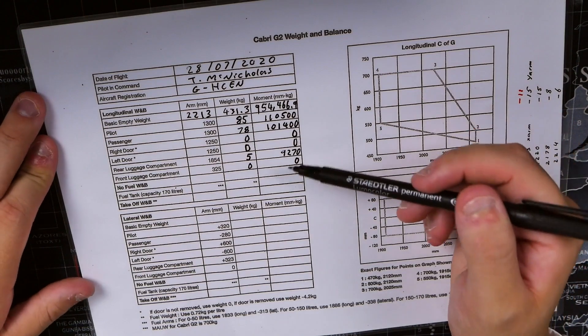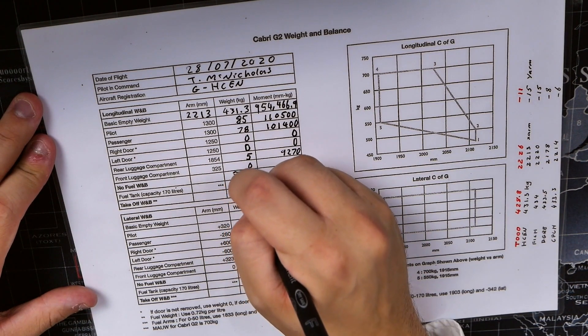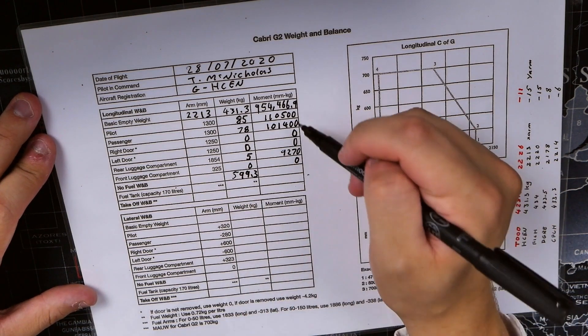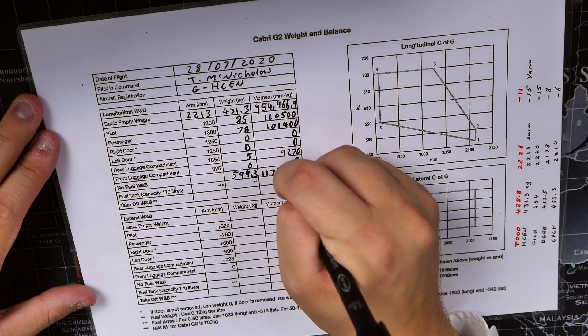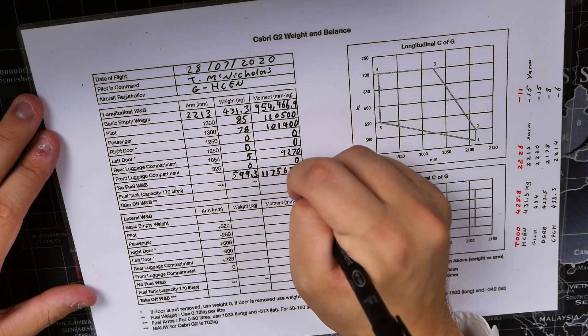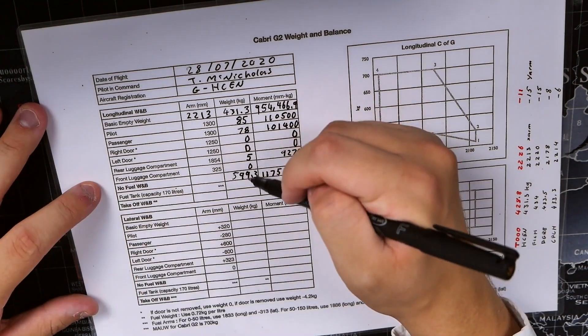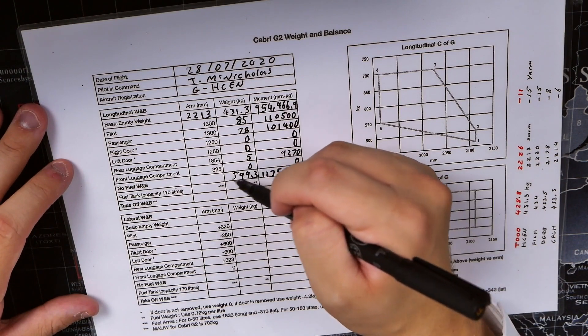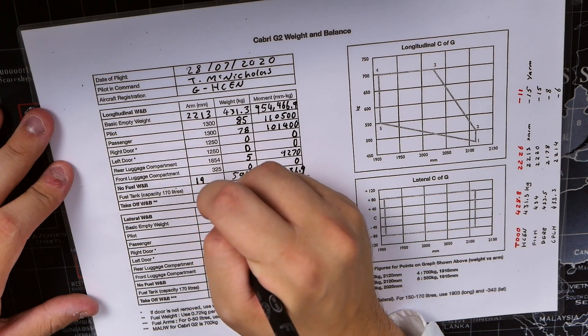Everything up to this point is factoring everything in the aircraft now for our flight except for the fuel. We total up the weight section to give us 599.3 kilograms, and we also add up the moment section to give us 1175636.9. To get the arm, we divide the total moment by the total weight of the aircraft so far without fuel, and that gives us roughly 1961.6.